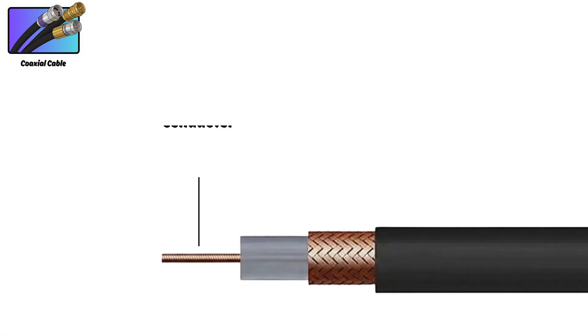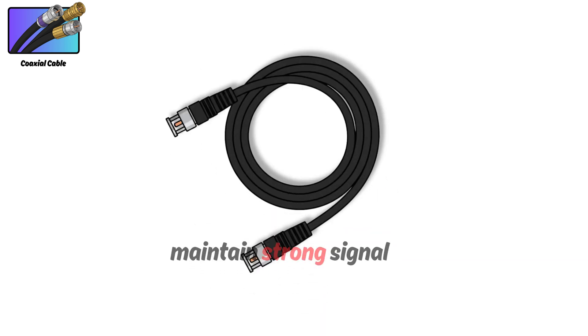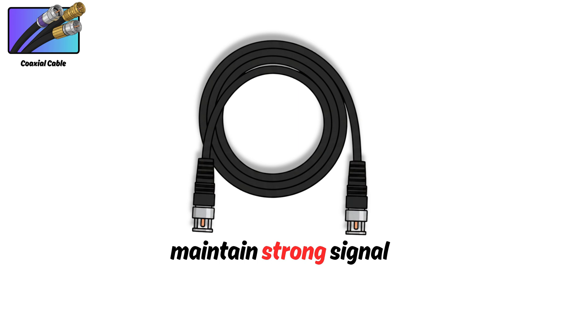On the inside, they have a single copper core that carries information, surrounded by a thick insulating layer, then a woven or foiled metal shield that protects the signal from outside interference, and finally a durable outer jacket. This layered design allows coax to maintain strong signal quality over long distances without losing much speed.